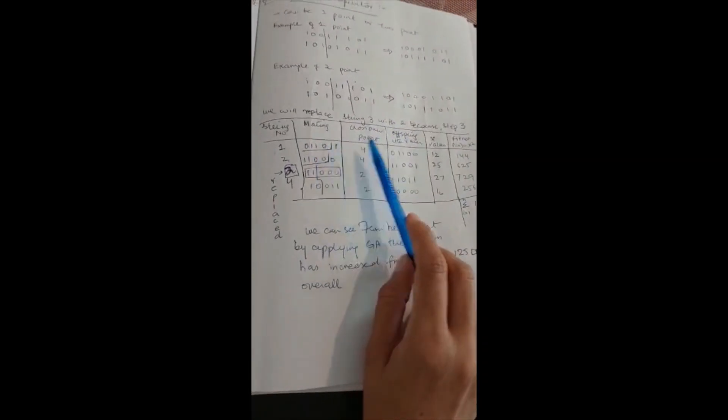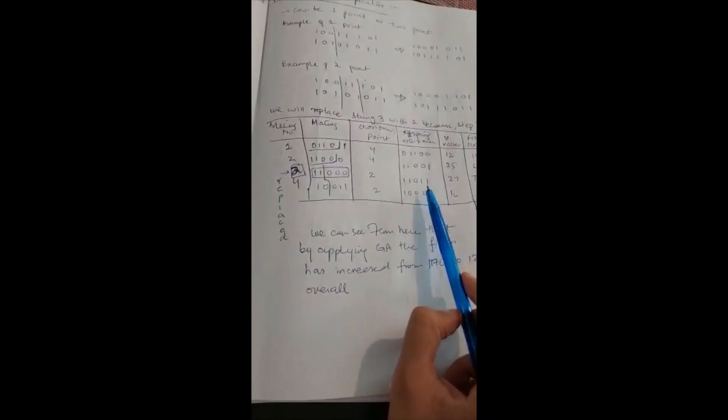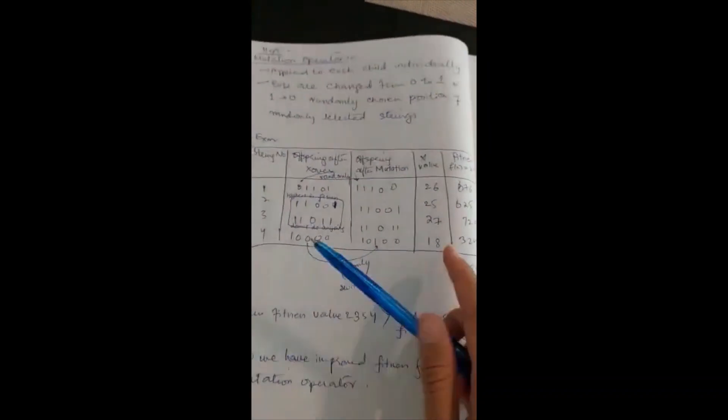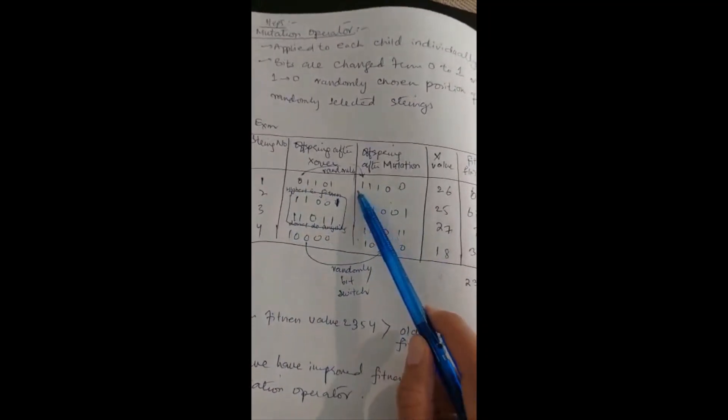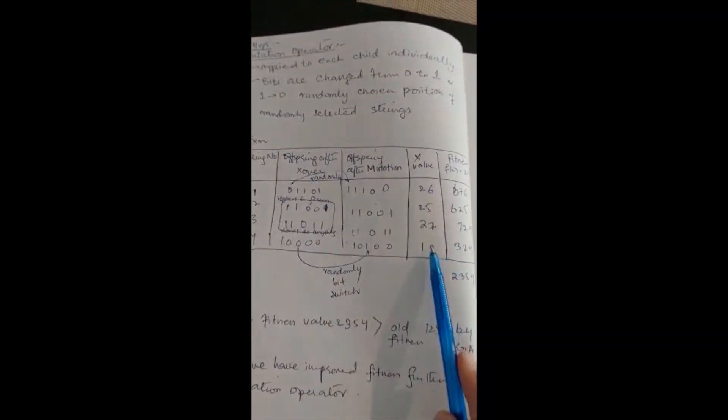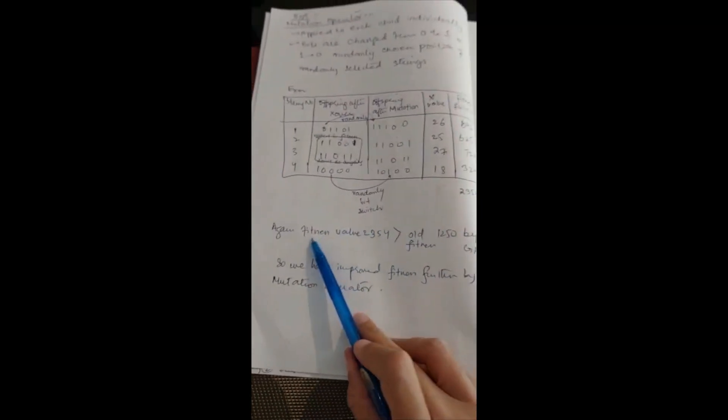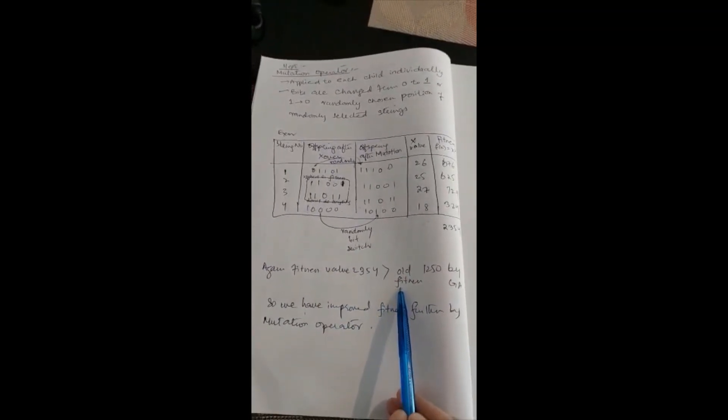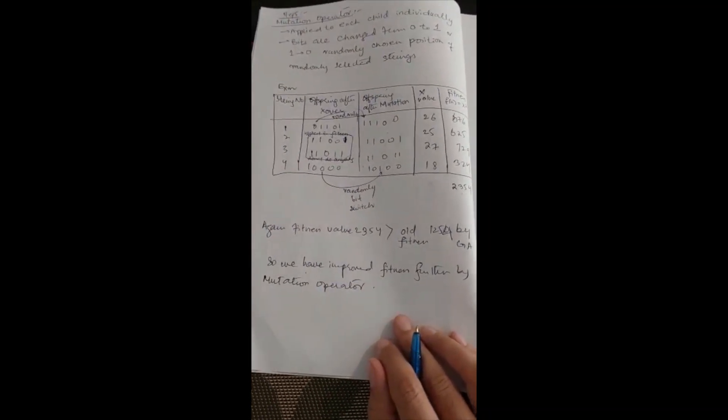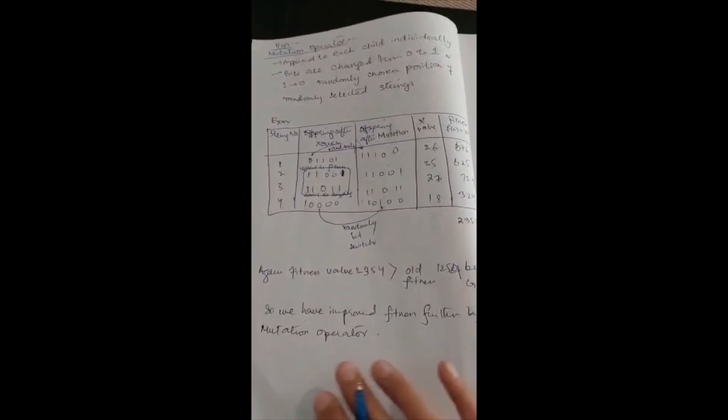You can see these are the offsprings after mutation in decimal values. When you take the square, you can see the summation is even bigger than earlier. The fitness value of 2354 is larger than the old fitness of 1254 by crossover. We have improved fitness further by mutation operator. So we have ended the five steps involved in genetic algorithm.